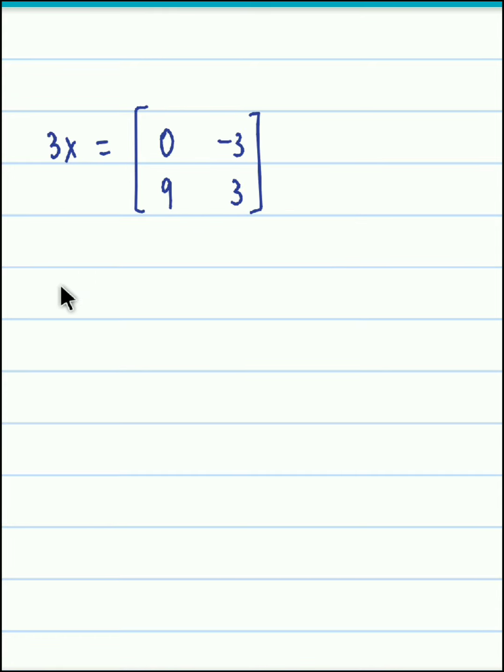Now you bring down 3 onto the right hand side, so we have X is equal to 1 by 3 of 0, minus 3, 9, 3. And now we perform the scalar multiplication. We multiply each of these elements by 1 by 3.